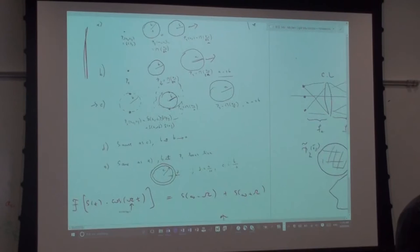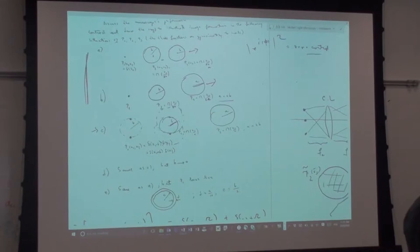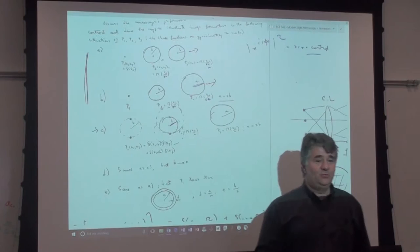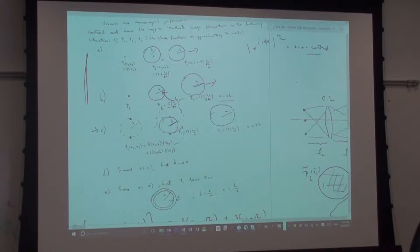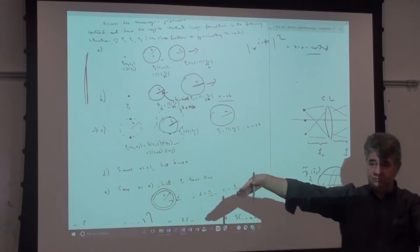Problem D: same as C but now B — the radius of the objective — goes to zero. This means the objective has zero numerical aperture: a pinhole in the back focal plane. The NA is k₀·sin(θ) = k₀·NA, so closing down to zero angle means terrible resolution — no spatial frequency bandwidth at all.